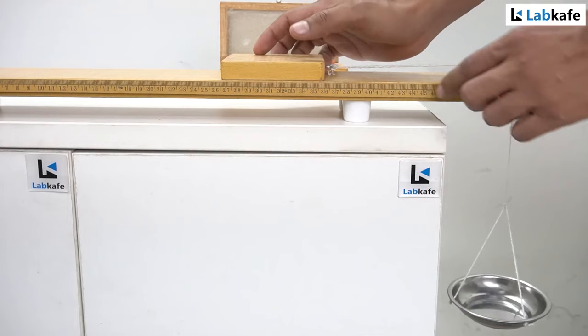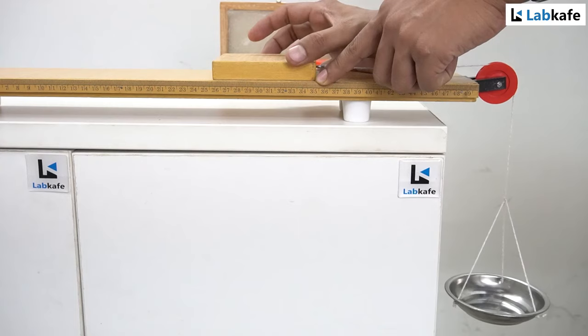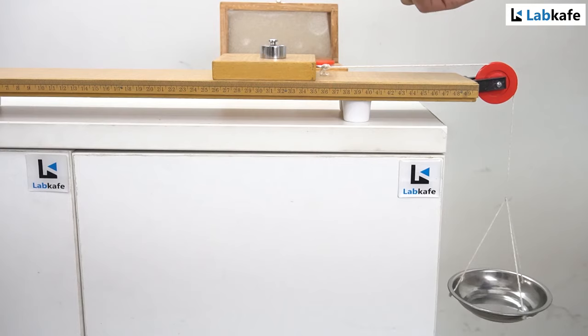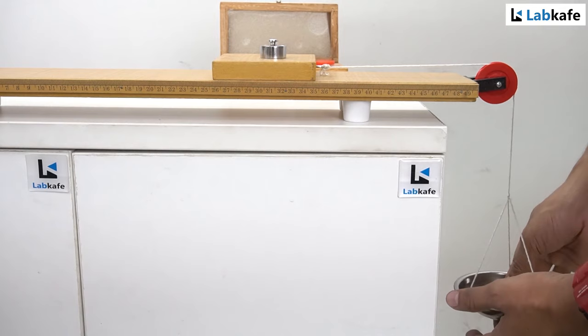So I will place the wooden block back on the same place which is at 35 centimeters. Then put a 50 gram weight on top of the block. After that I'm loading 20 grams and tapping.